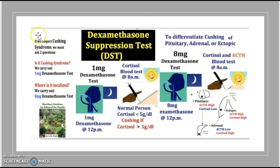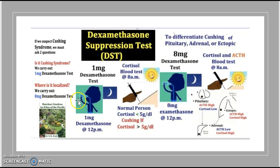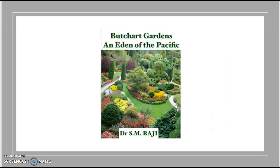Quick overview: if you suspect Cushing syndrome, first ask — is it Cushing syndrome? Use a 1 milligram dexamethasone test; if cortisol is greater than 5 micrograms per deciliter, it's Cushing syndrome. Then localize using an 8 milligram dexamethasone test with cortisol and ACTH levels: high ACTH with low cortisol means pituitary; high ACTH with high cortisol means ectopic; low ACTH with high cortisol means adrenal.